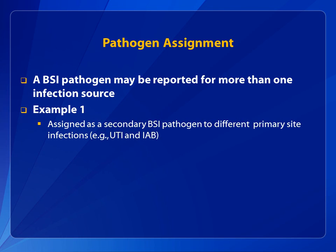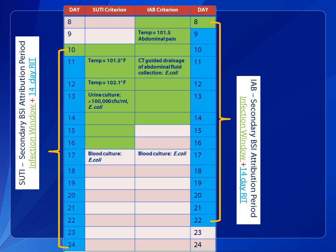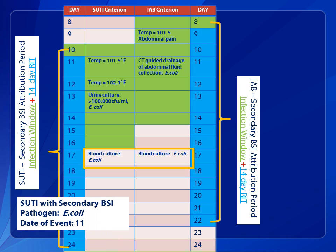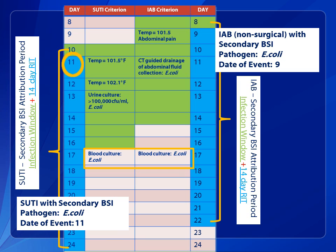The second pathogen assignment concept relates to the assignment of a pathogen to more than one infection source. A secondary BSI pathogen may be assigned to two different primary site infections — for example, a UTI and an intra-abdominal, or IAB, infection. Two different primary site infections have been identified, and a pathogen from a blood culture collected on day 17 has a matching pathogen to both primary site infections. Because the blood culture collection is within both the SUTI and non-surgical IAB secondary BSI attribution period, report both primary sites with a secondary BSI. The final determination is a SUTI with secondary BSI pathogen E. coli, date of event hospital day 11, and a non-surgical IAB pathogen E. coli, date of event hospital day 9.